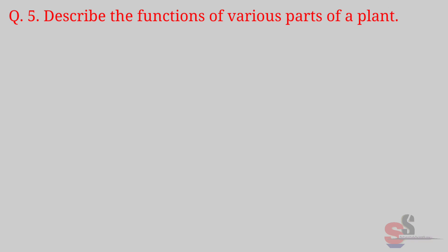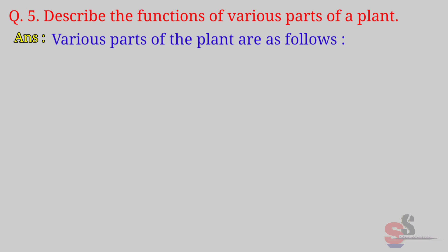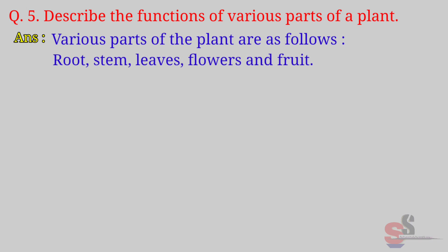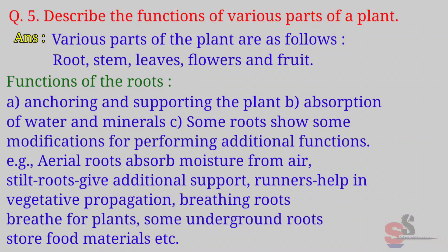Question 5: Describe the functions of various parts of a plant. Answer: Various parts of the plant are root, stem, leaves, flowers, and fruit. Functions of the root: Anchoring and supporting the plant; absorption of water and minerals. Some roots show modifications for additional functions — for example, aerial roots absorb moisture from air, stilt roots give additional support, runners help in vegetative propagation, breathing roots breathe for plants, and some underground roots store food materials.